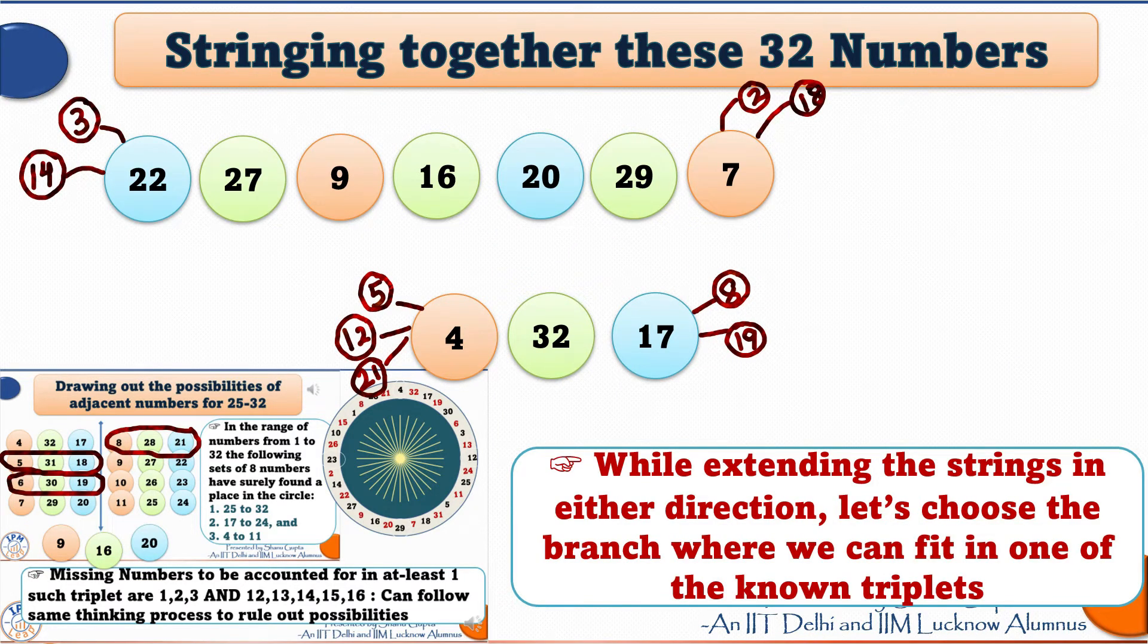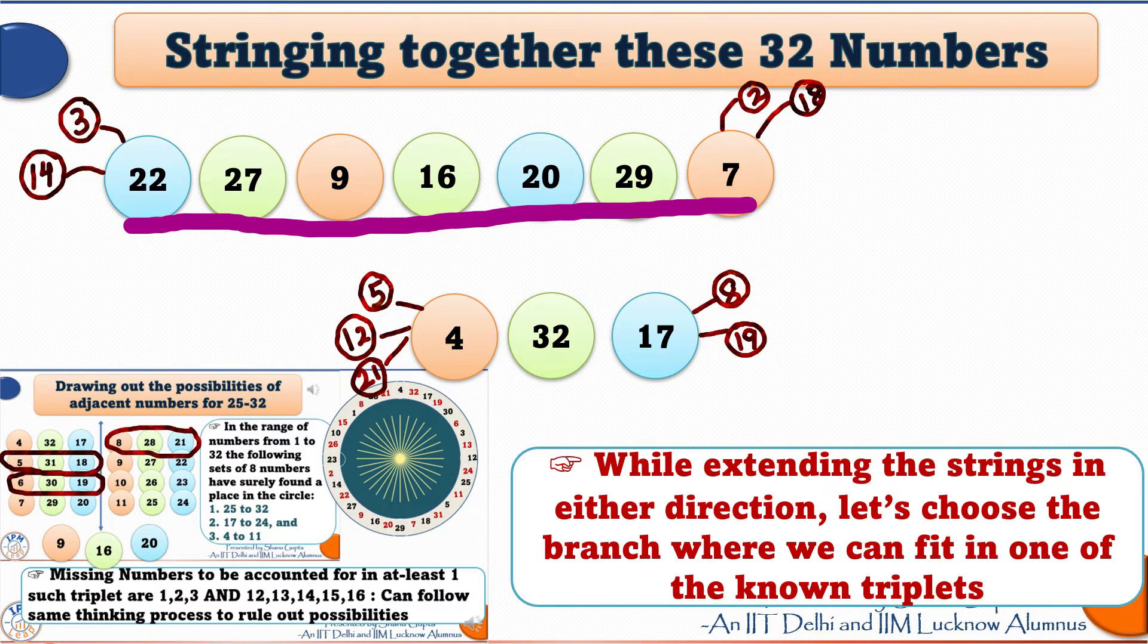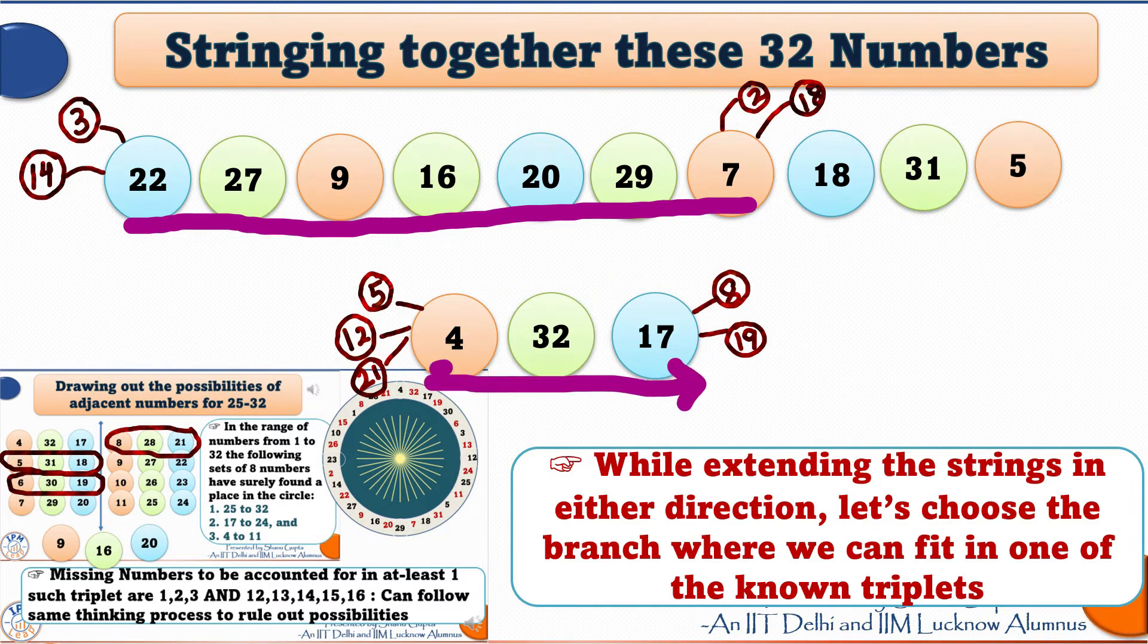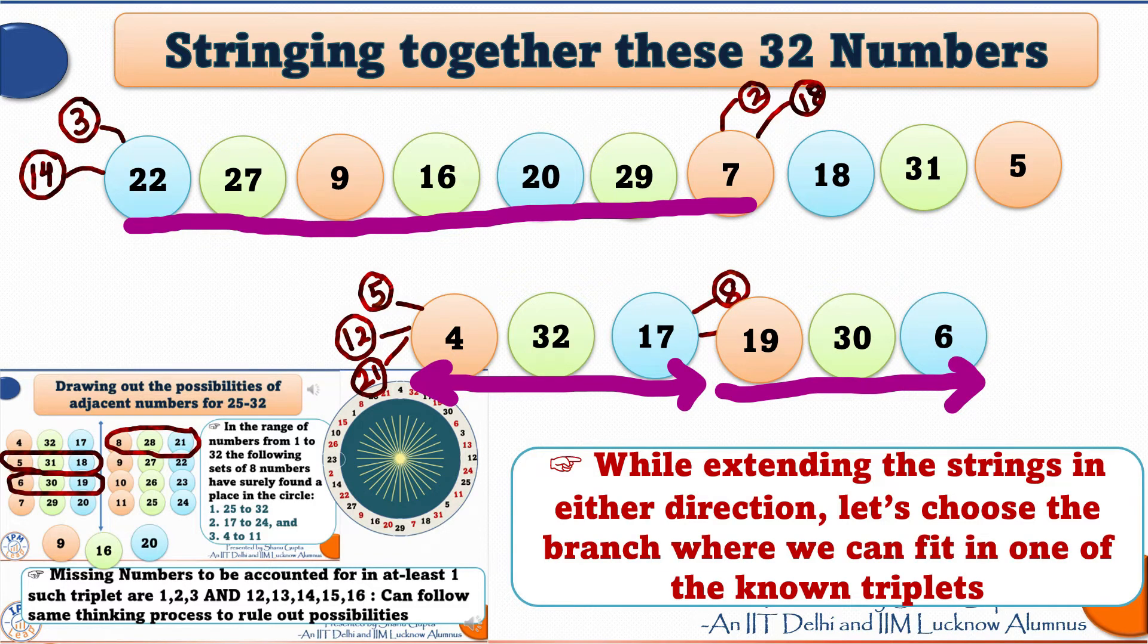So, look at the first string and extend it to the right. I will choose the branch that has 18 because 18, 31 and 5 is a known triplet. For our second string, extending it to the right, I will choose the branch 19 because 19, 30 and 6 is a known triplet.